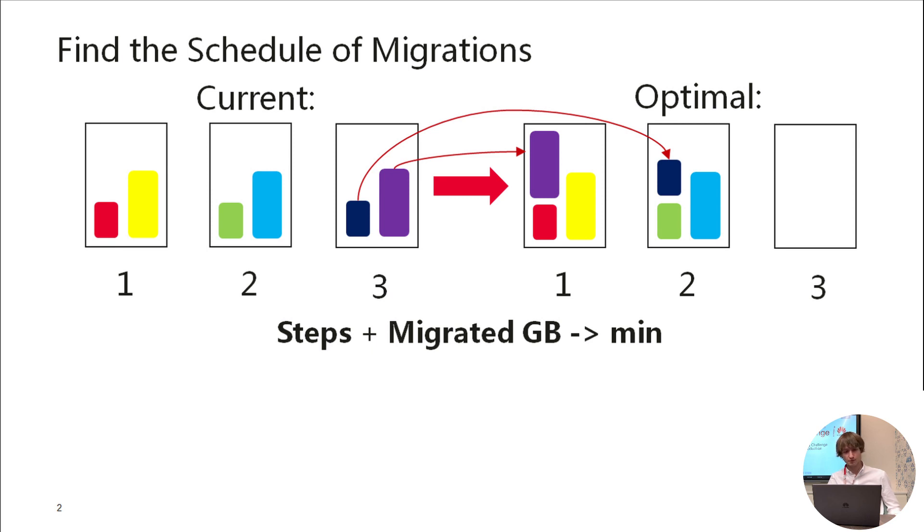Let's look at this picture representing our input. On the left, you can see the initial cluster state. We have three servers here, and colored boxes represent our items, virtual machines. On the right, the optimal state, which is also given as our input. The boxes are the same, but they are distributed not the same.